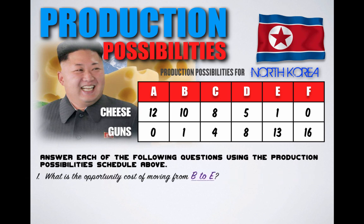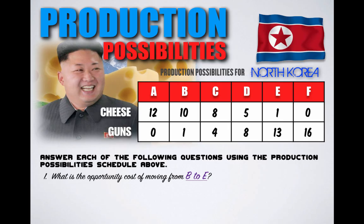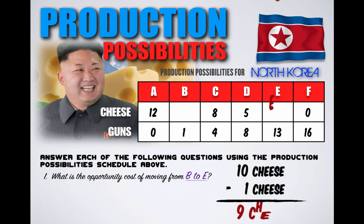Question number one: what is the opportunity cost of moving from combination B to combination E? It looks like the dear leader is going on another tantrum — he wants to increase gun production at the cost of cheese production.